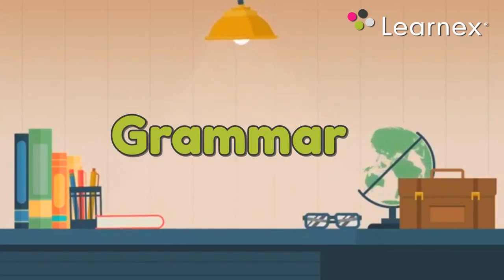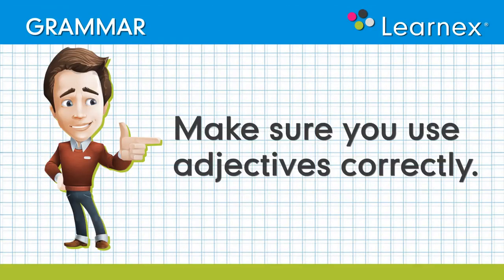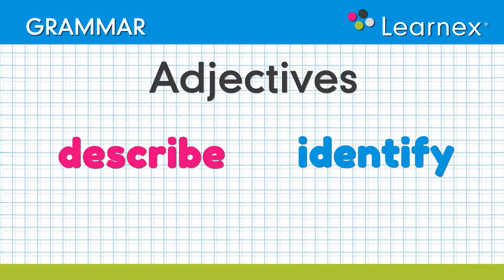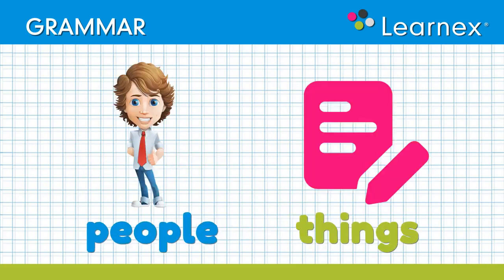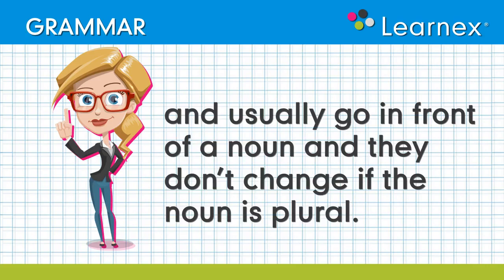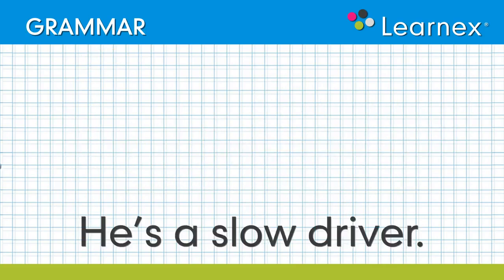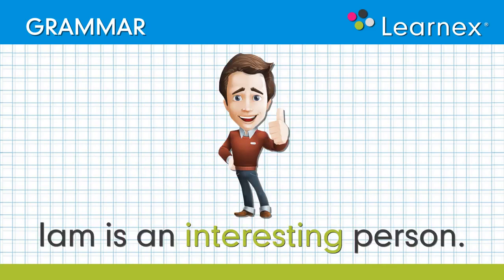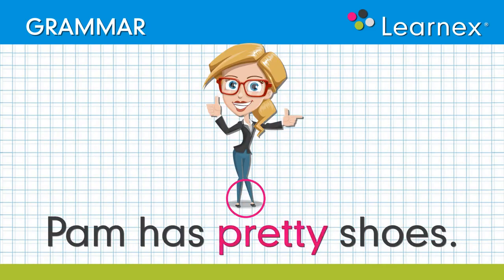Learn X grammar tip: adjectives. Make sure you use adjectives correctly. Adjectives describe, identify, and quantify people or things, and usually go in front of a noun. They don't change if the noun is plural. For example: he's a slow driver, I am an interesting person, Pam has pretty shoes.